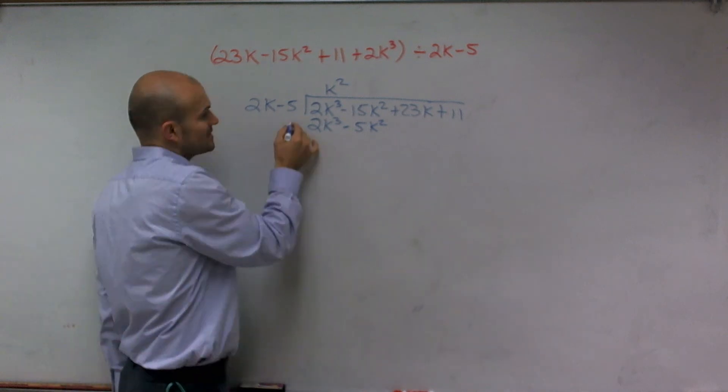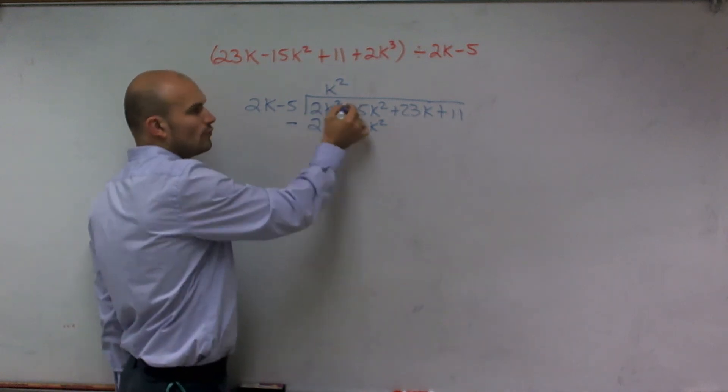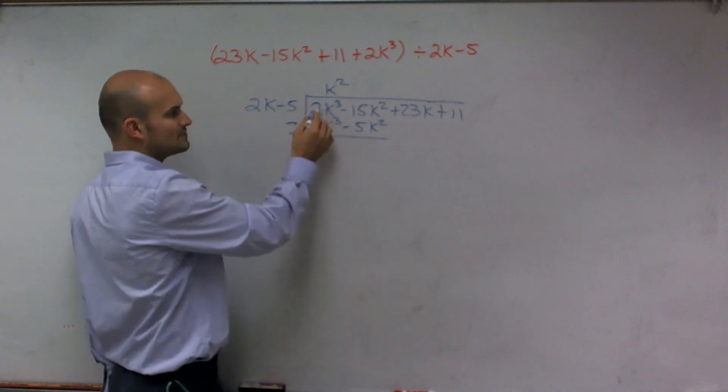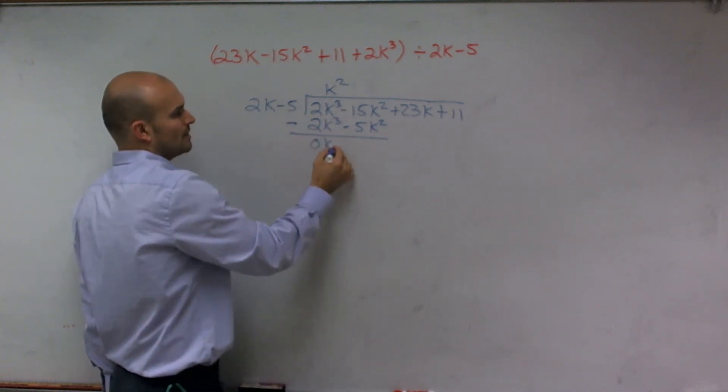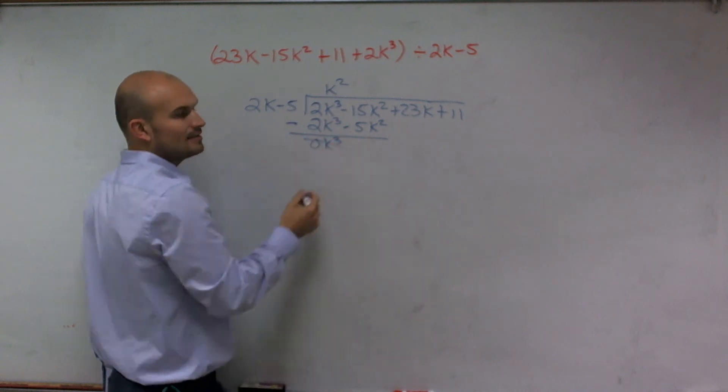Now the next thing we want to do is subtract this whole row from the top row. So when we do that, I have 2k cubed minus 2k cubed, which is 0k cubed. Well, 0 times anything cancels out, right?